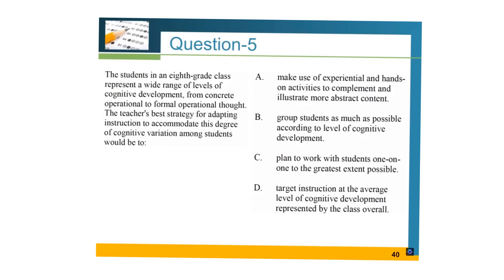Question number five: the students in an eighth grade class represent a wide range of levels of cognitive development, from concrete operational to formal operational thought. The teacher's best strategy for adapting instruction to accommodate this degree of cognitive variation would be to: A) make use of experiential and hands-on activities to complement and illustrate more abstract content; B) group students as much as possible according to their level of cognitive development; C) plan to work with students one-on-one to the greatest extent possible; D) target instruction at the average level of cognitive development represented by the class overall.